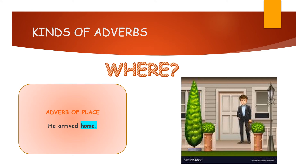Moving on to the next kind: adverb of place. He arrived — but where did he arrive? The adverb of place talks about 'where'. Look at the picture: the man has arrived home. 'He arrived home' — so 'home' is the adverb of place here, because it describes the verb 'arrived'.